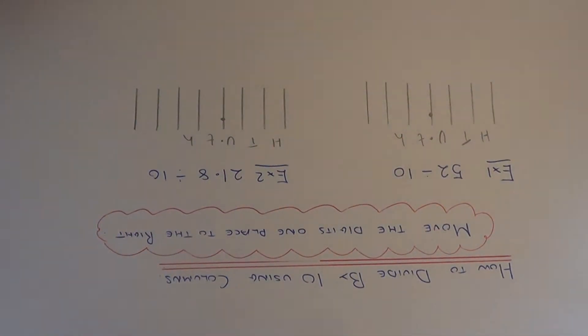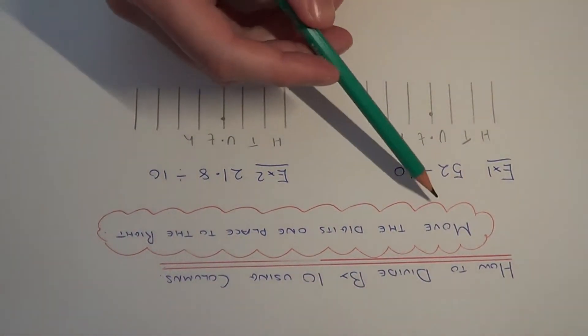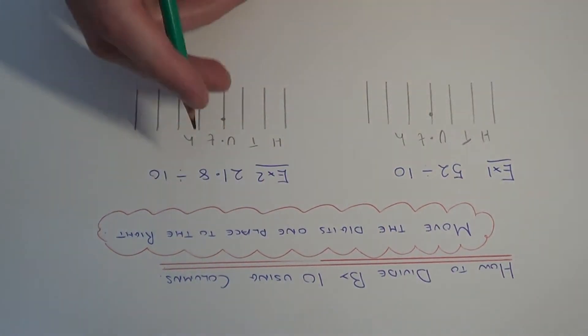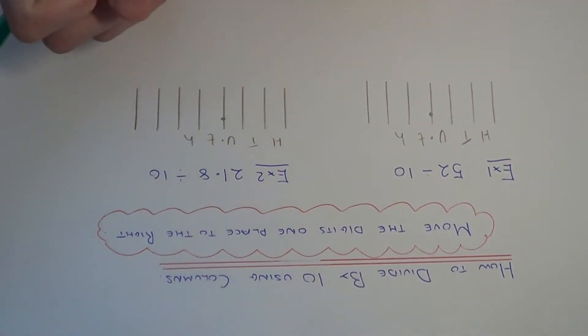Now I'm going to show you how to divide numbers by 10 using columns. To divide by 10, all you have to do is move the digits one place to the right. This is because you're making the number smaller, so the columns to the right are smaller.